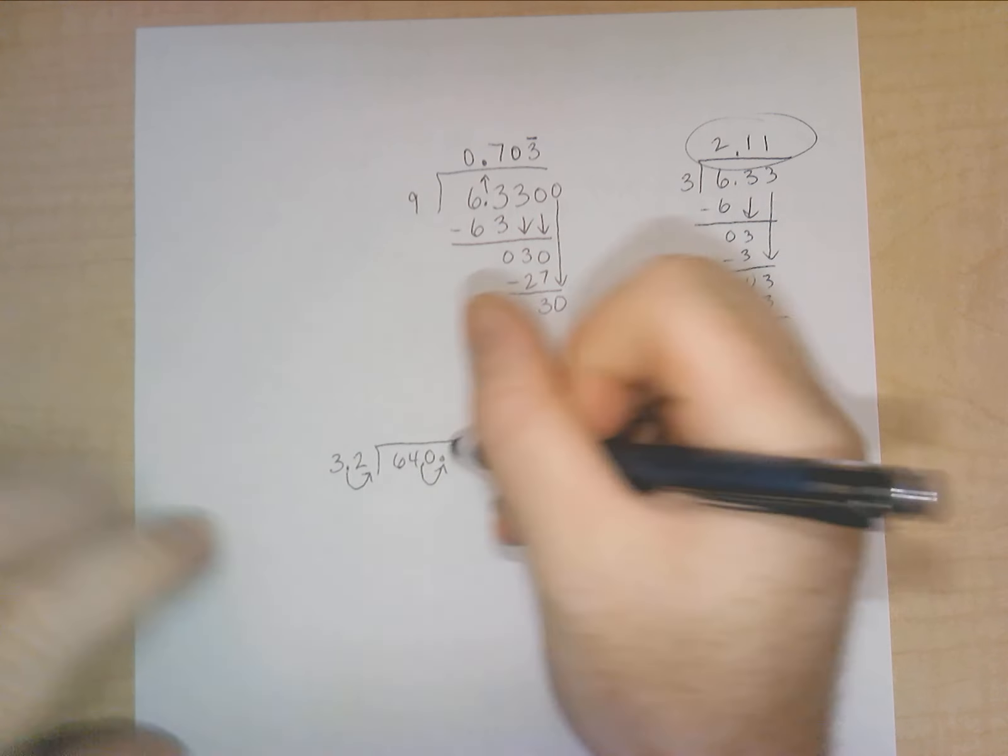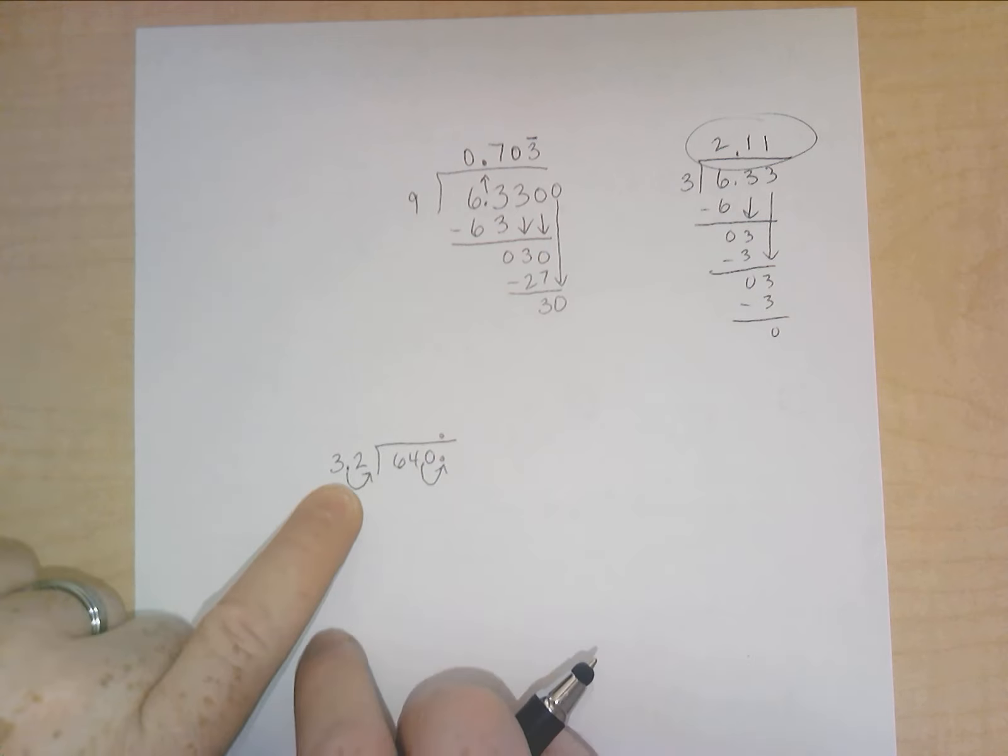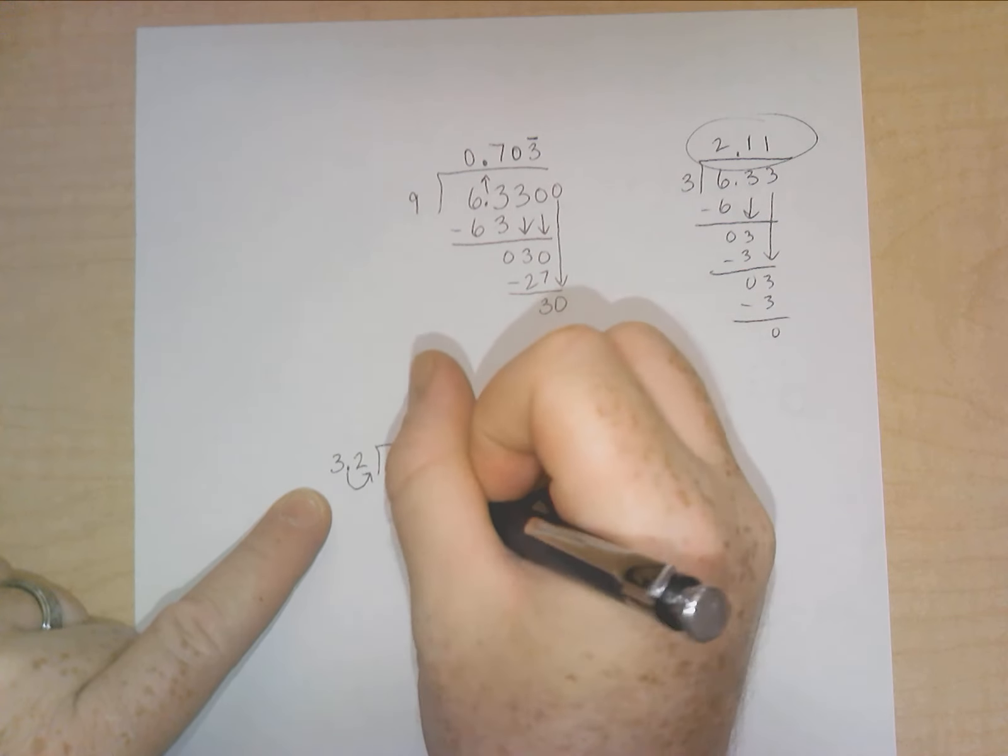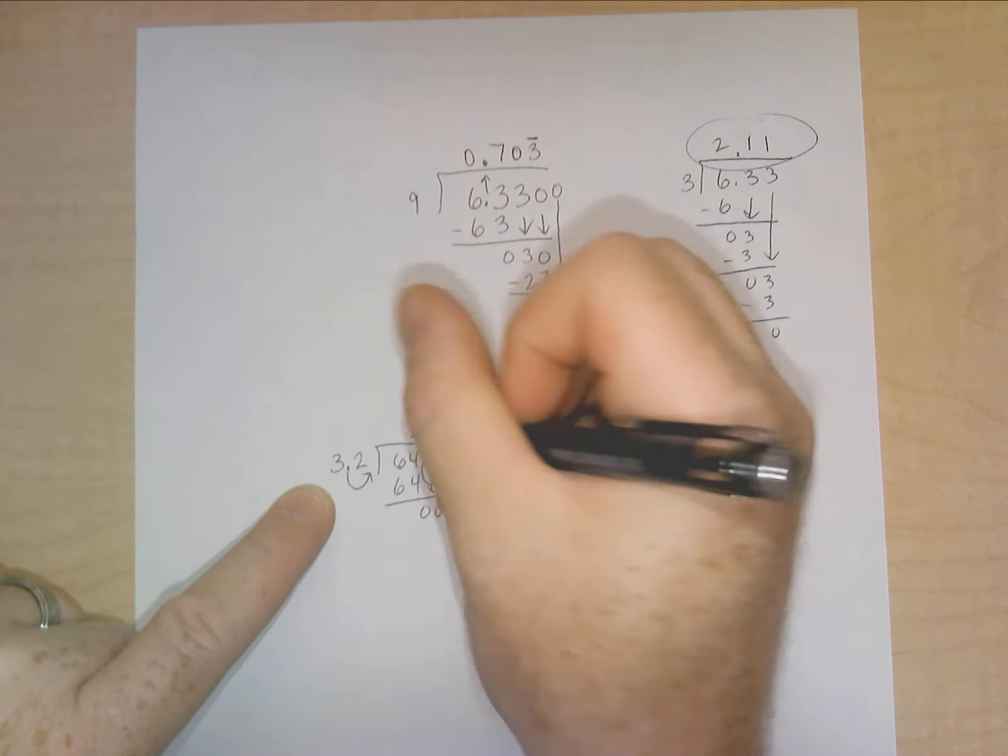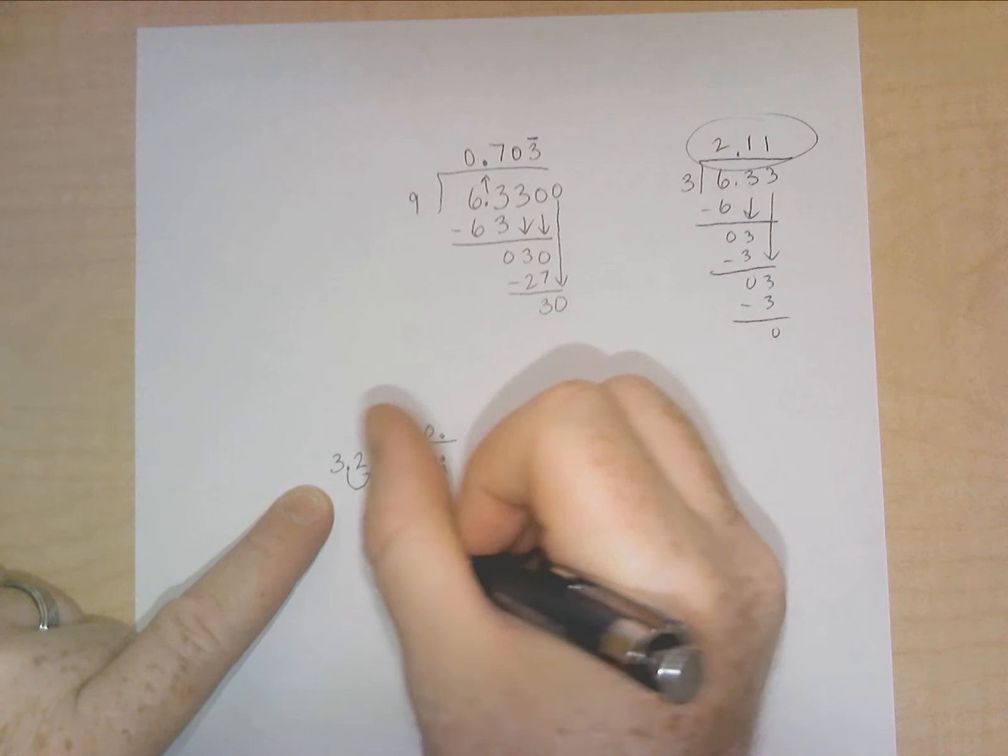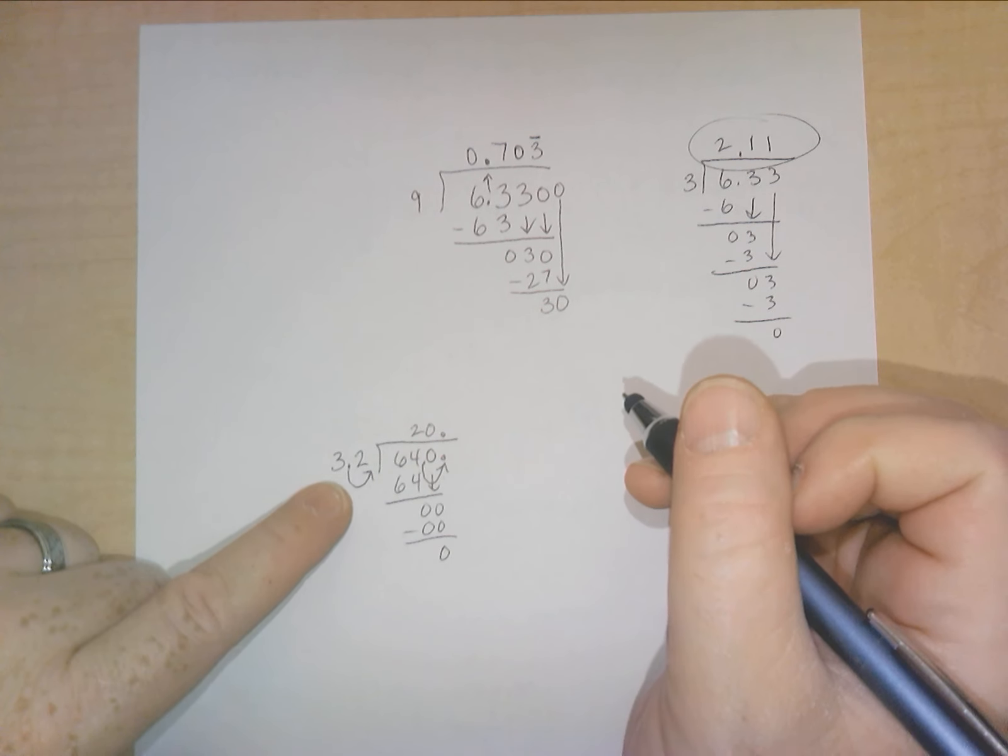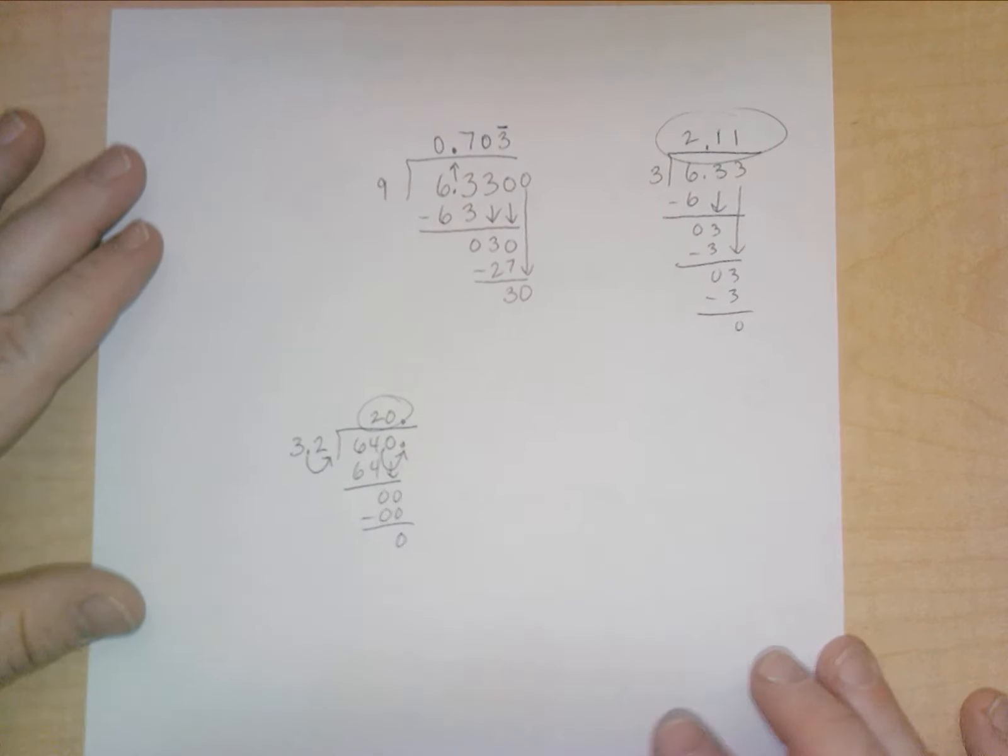So once I move that, now I can divide. I just move this decimal straight up. Now it's no longer a decimal. It actually becomes 32. The decimal goes over here. So 32 goes into 6. Nope. 32 goes into 64. Yes. Two times. Bring down your next 0. 32 can go into 0, 0 times. And that's going to be it. So 3.2 can go into 64 20 times.